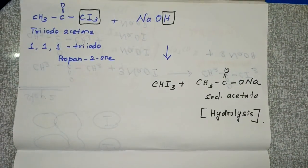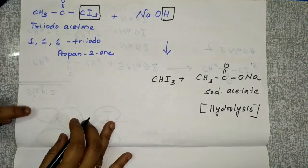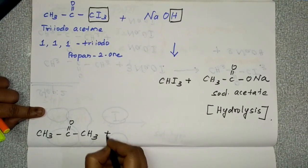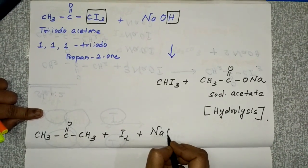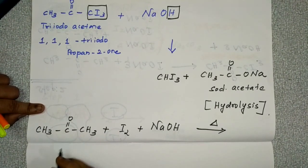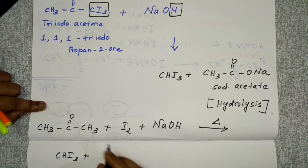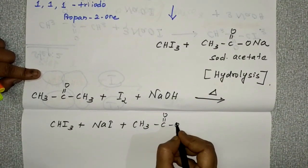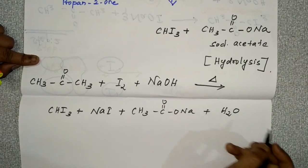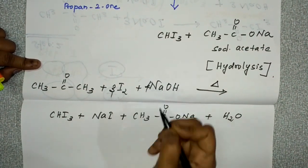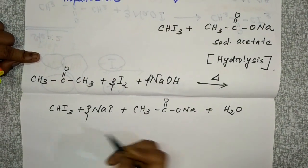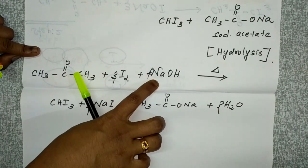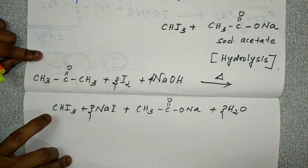All three steps can be written as one overall reaction. Acetone (CH3-C(=O)-CH3) with iodine and sodium hydroxide on heating gives iodoform, sodium acetate (CH3-C(=O)-ONa), and water. The balanced reaction is: CH3COCH3 + 3I2 + 4NaOH → CHI3 + CH3COONa + 3NaI + 3H2O. This is the overall reaction using sodium hydroxide.